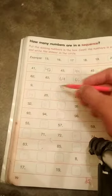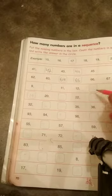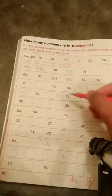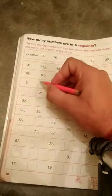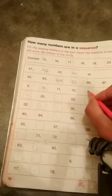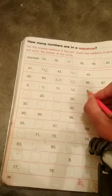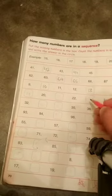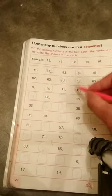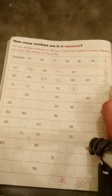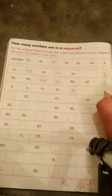Next question is 9, empty box, 11, 12, empty box. So, 9, 9 ke baad beta, 10, 11, 12, and then 13. And then count total number: 1, 2, 3, 4, and 5. And write here 5. Okay.